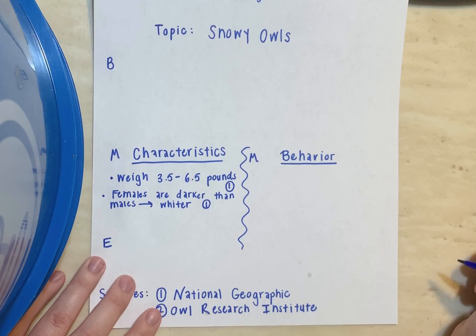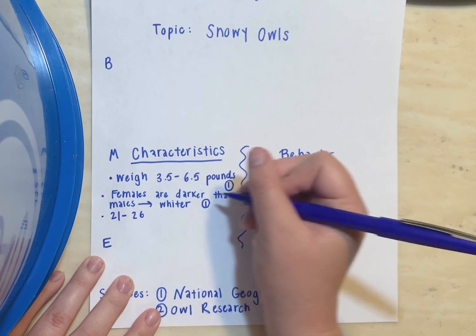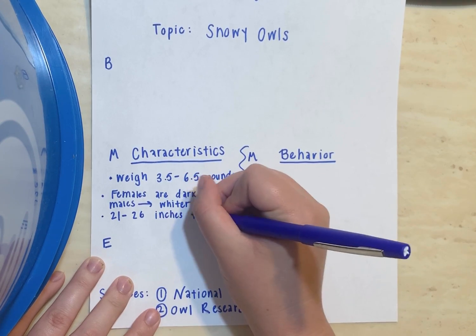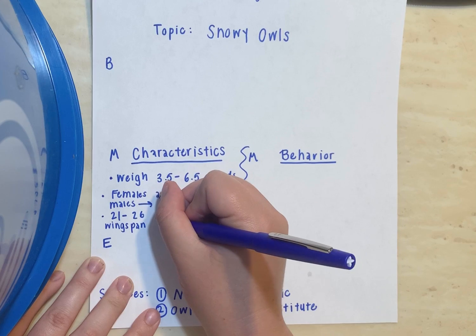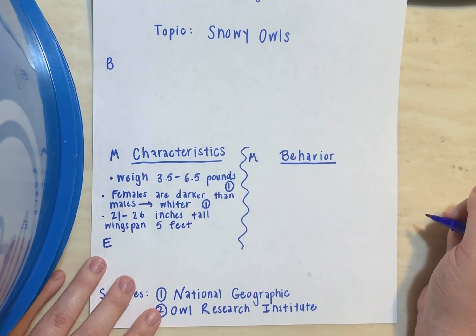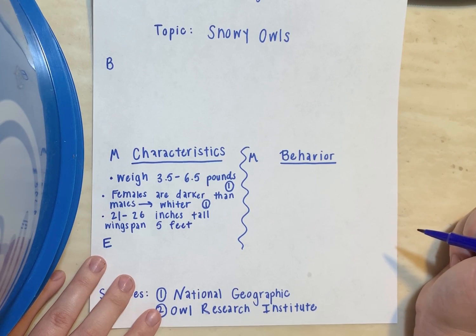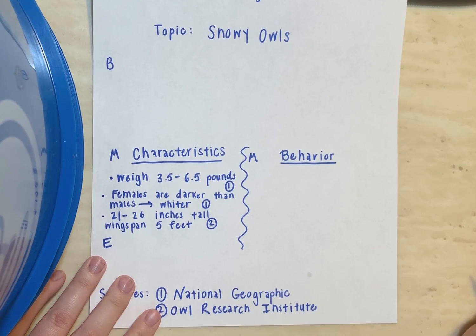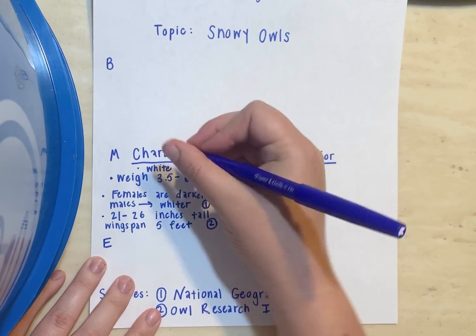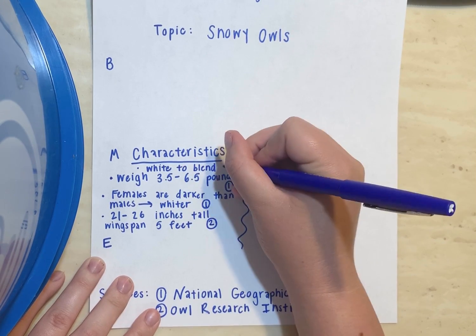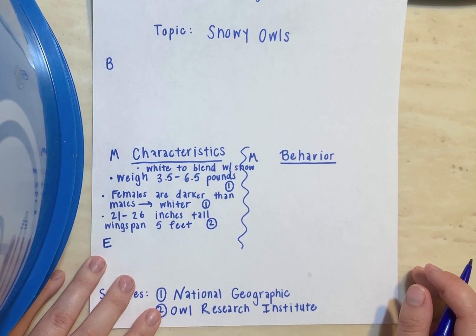Let's talk about how tall they are and how big they get. I found that snowy owls grow to be 21 to 26 inches tall with a wingspan of five feet. Boys and girls, that's about as tall as Ms. Johns — she's about five feet three inches tall. Their wingspan is almost as tall as me, so they can get pretty big. I found that in source two. I also know that they are white to blend in with the snow, and that came from source two as well.